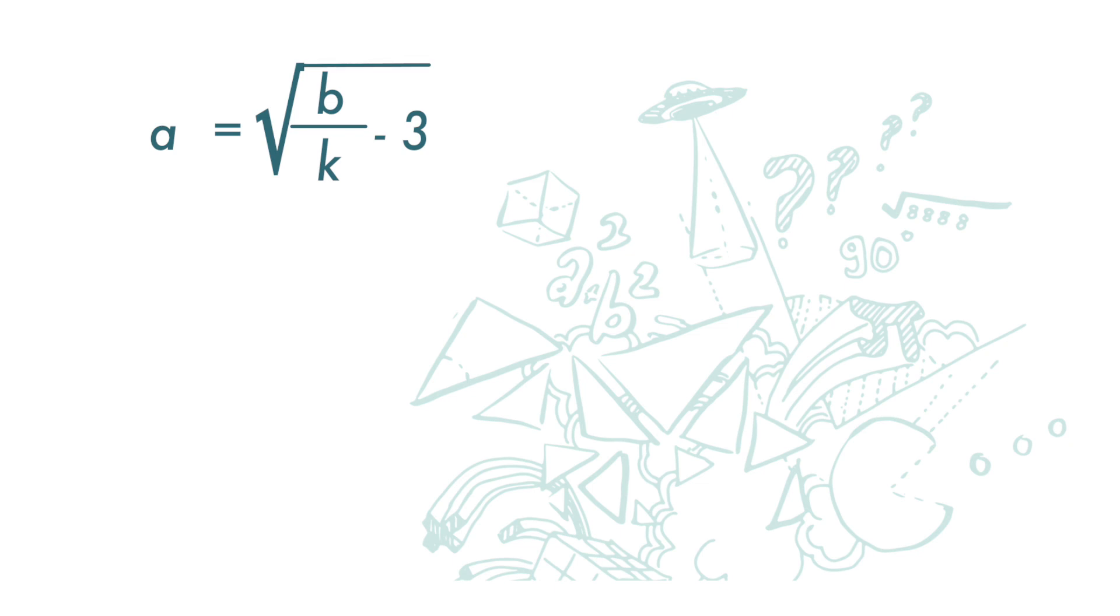First, we get rid of the square root. We move to the other side, square root becomes square. So we get a square.